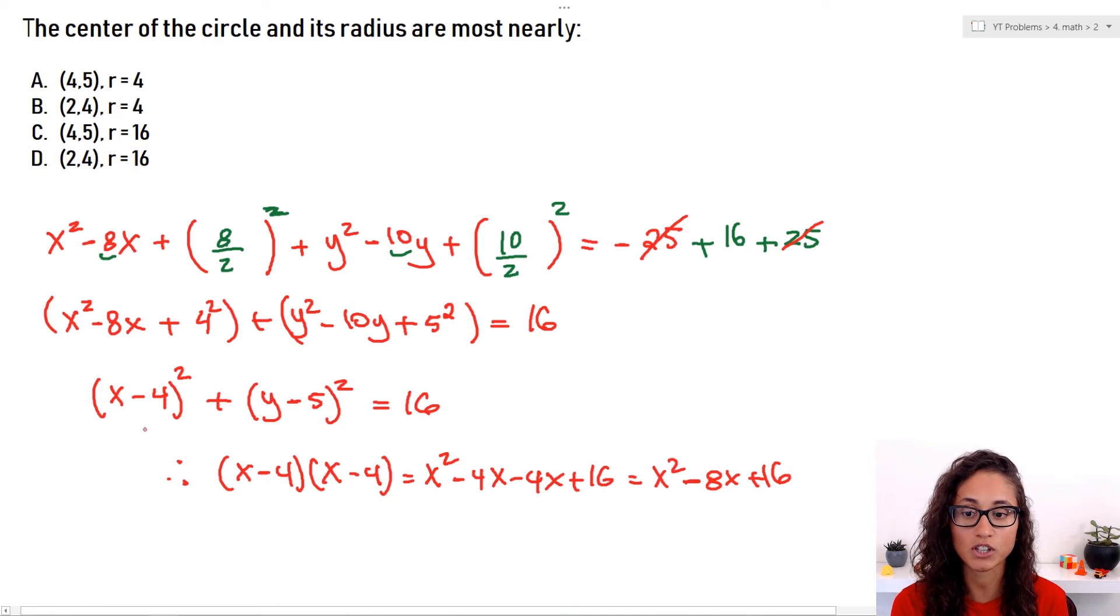Now we have the equation as we wanted. So we already know that our h and k is going to be 4 and 5. So we know it's going to be either A or B. And then this, remember guys, this is r squared. So it's not r. So r squared equals 16 but we want the radius, we don't want r squared. So all you gotta do is take the square root of 16 and that gives you 4. So the answer is going to be A: (4, 5) and then the radius is 4. I hope this makes sense.